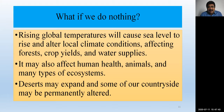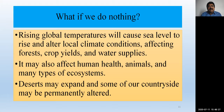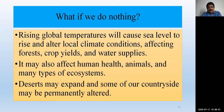Deserts may expand and some of our countryside may be permanently altered. If we lose plants, we will lose forests, and those forest areas may convert into desert or grassland. If forests are not there, there will be no rain. Or if there is rain, it will just deliver water in a particular area and not distribute it into the surroundings — so there will be total imbalance in the weather.